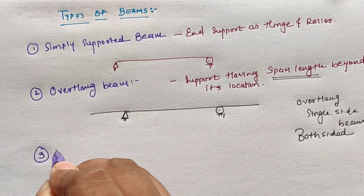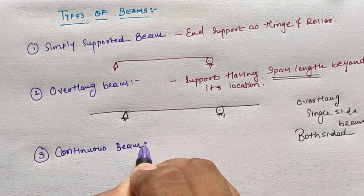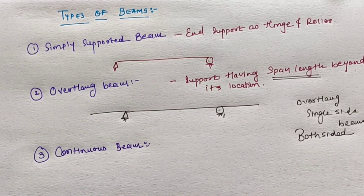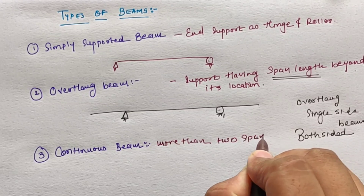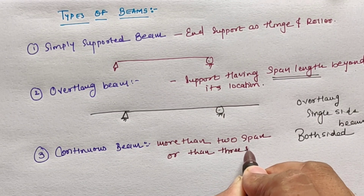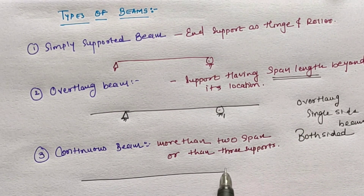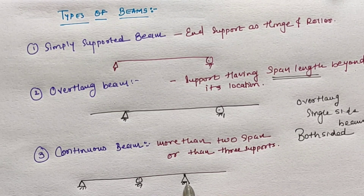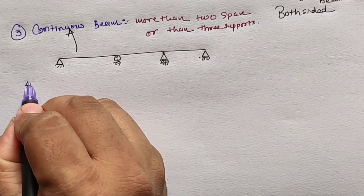The third type is the continuous beam, defined as a beam having more than two spans or more than three supports. If the number of spans is more than two, or more than three supports are provided, the beam is known as a continuous beam.